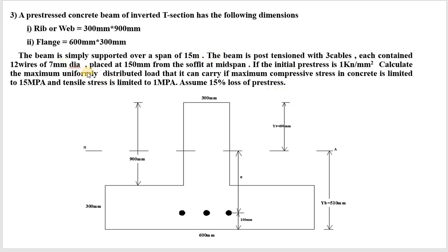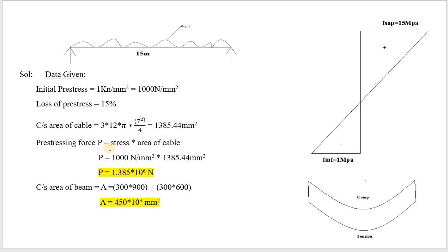We need to calculate the maximum UDL load the beam can carry, using the compressive stress limit of 15 MPa, tensile stress limit of 1 MPa, and 15% loss of pre-stress. The beam is simply supported over 15 meters. This is the flange and web layout, and we will determine YT and YB in further calculations.